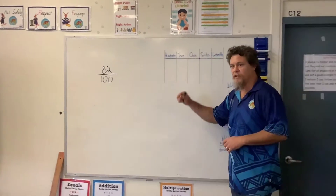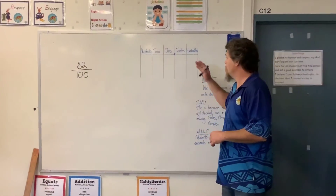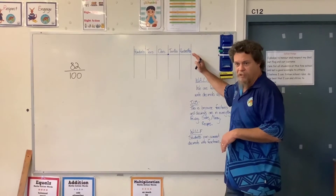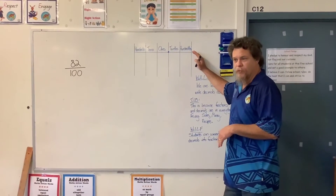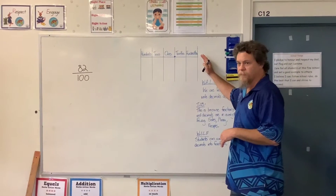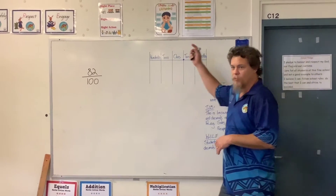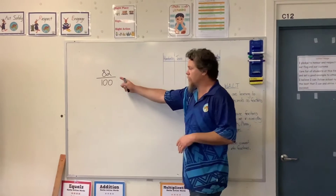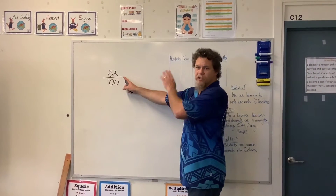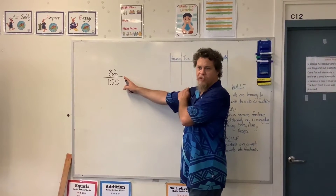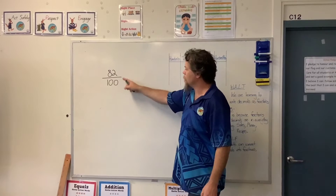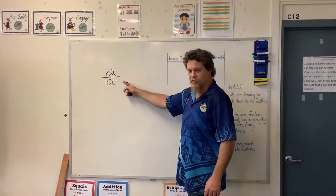So let's do exactly that. I have my place value chart. I highly recommend, if you have any trouble with this, you always draw up one of these. And when you say this correctly, it becomes really easy to transpose to a decimal. How do I read that? What does it say?